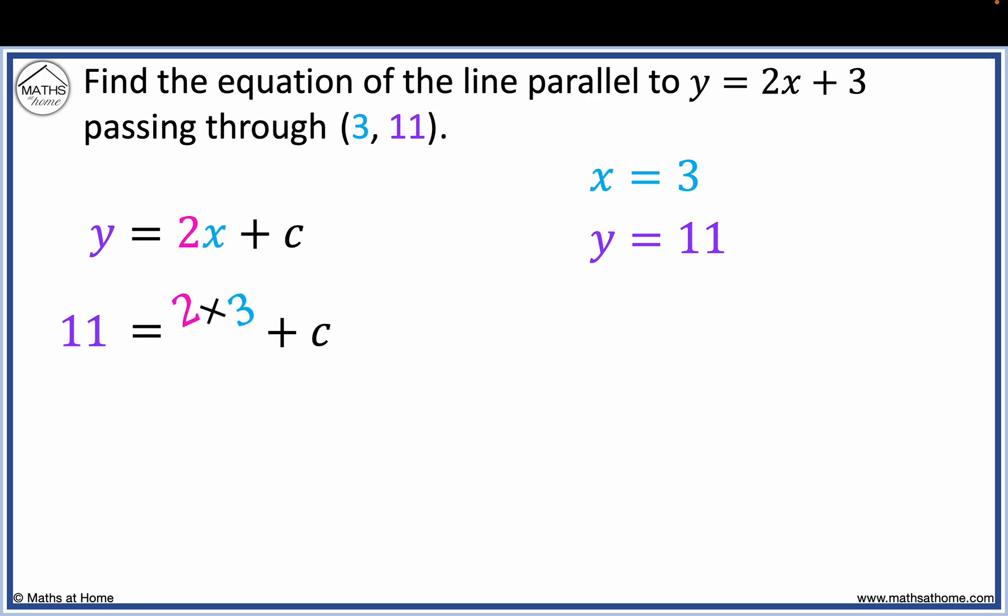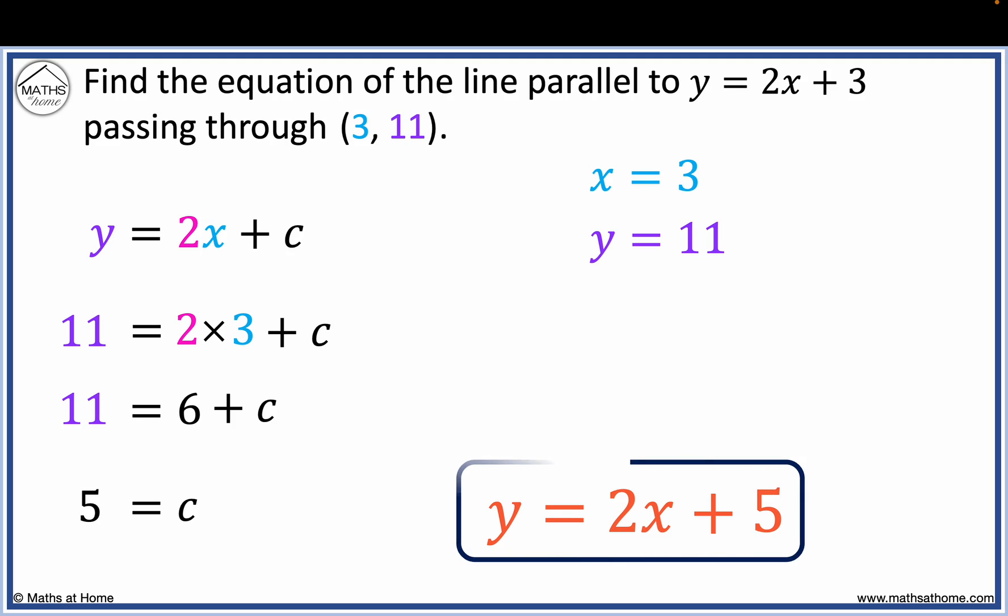Now 2 times 3 equals 6, and subtracting 6 from both sides, we obtain 5 equals c. Now we have found that c equals 5, so y equals 2x plus c becomes y equals 2x plus 5.